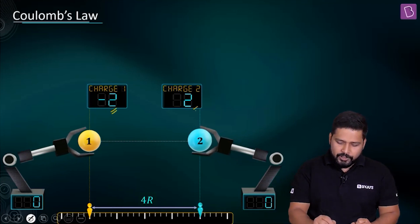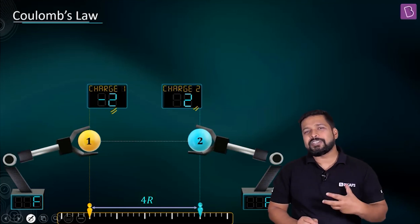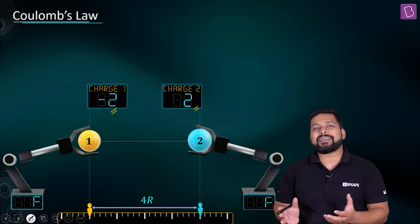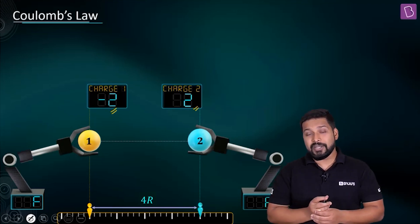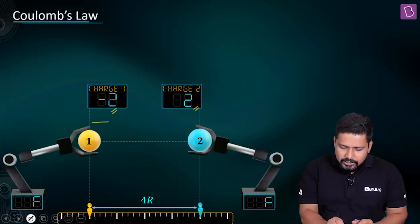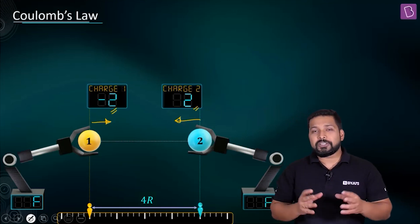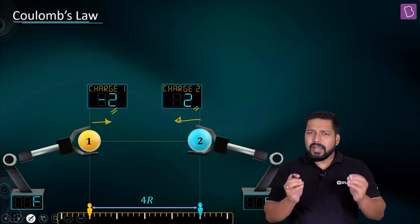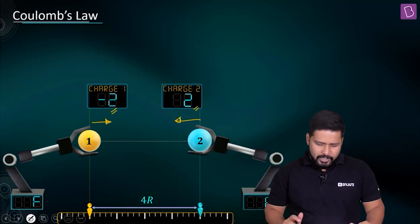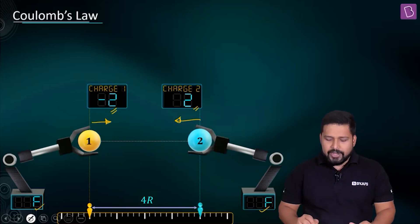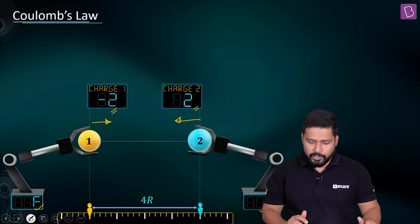The charges here are −2 and +2. One must be clear: is the force between these two charges attractive or repulsive? Since one is positive and one is negative — unlike charges — the force is going to be attractive. We start with charges −2 and +2 at a distance of 4. Both experience equal attractive force, which we call F.